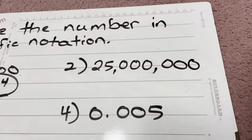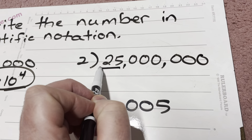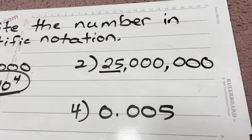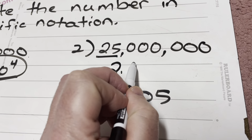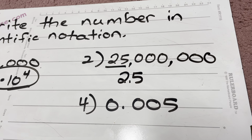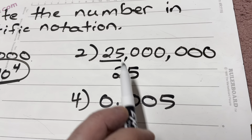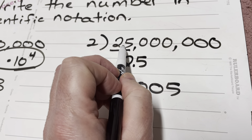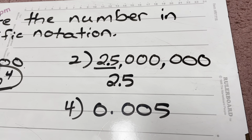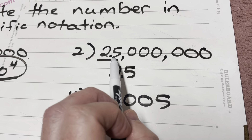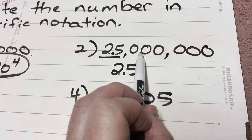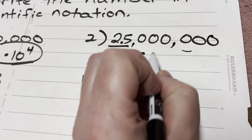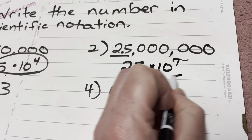25 million. I'm looking at 25, but my number has to be at least 1 and less than 10, so I'm going to have to do that as 2.5. I'm not going to put 25 because that's bigger than 10 — I'm going to put 2.5. If my decimal is here, how many places am I going to move the decimal to make it all the way over here? Once, twice, 3, 4, 5, 6, 7. That's going to be times 10 to the power of 7.